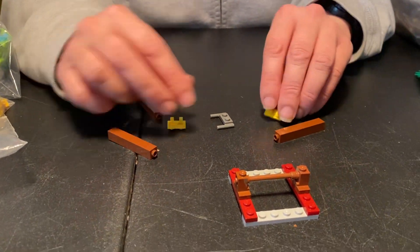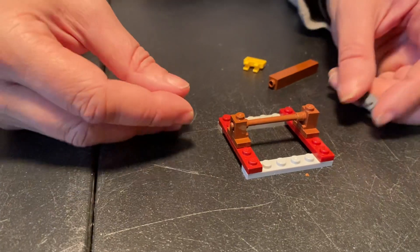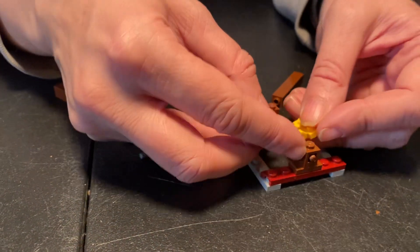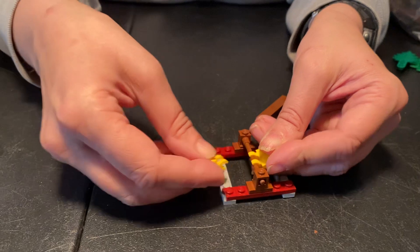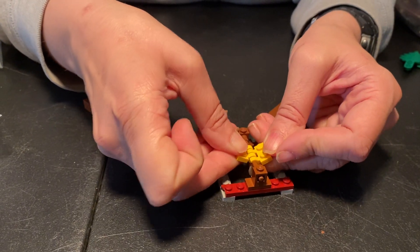Now you have these two clip pieces. Clip one of them on, and then clip the other one on like this.